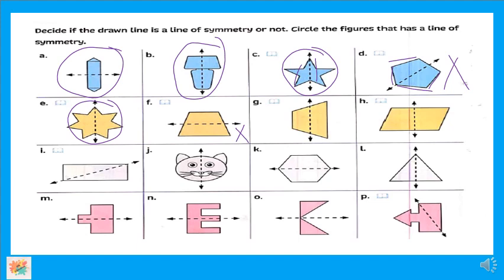طيب letter G — يعتبر line of symmetry؟ برضو not، ما ينفعش. طيب letter H — ايه رأيكم فيها؟ يا ترى الـ part ده والـ part ده قد بعض؟ لا، ده واحد كبير واحد صغير، واللي فوق واللي هنا مش زي بعض. طيب letter I — ده موضوع الـ rectangle اللي كنا قلنا عليه في الأول — يا ترى الـ line ده ينفع يكون line of symmetry؟ لا، ده ما ينفعش — عشان قلنا الـ corner اللي هنا مش هيجي على الـ corner ده لما تعمل fold.